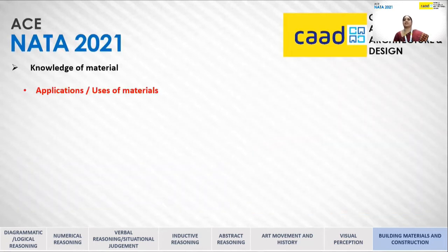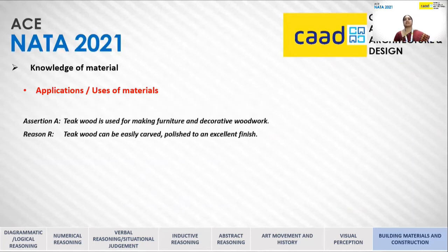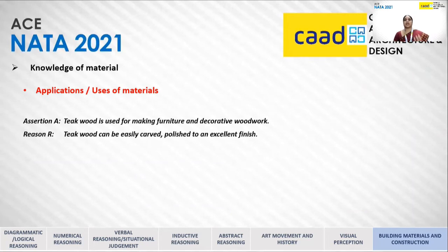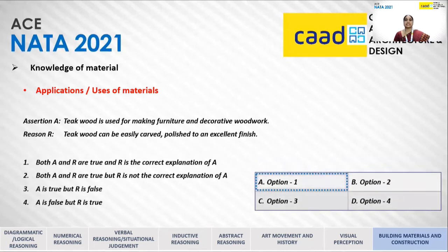Applications and uses of materials in a building will also be tested — how materials are used in construction. For example: teak wood is used for making furniture and decorative woodwork. The reason given is that teak wood can be easily carved and polished to an excellent finish. Option 1 is the correct answer — both the assertion and reason are true, and the reason is the correct explanation of the assertion.